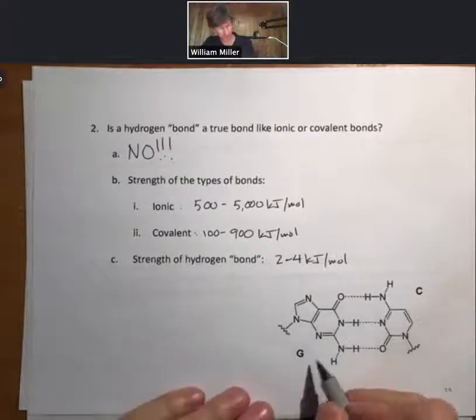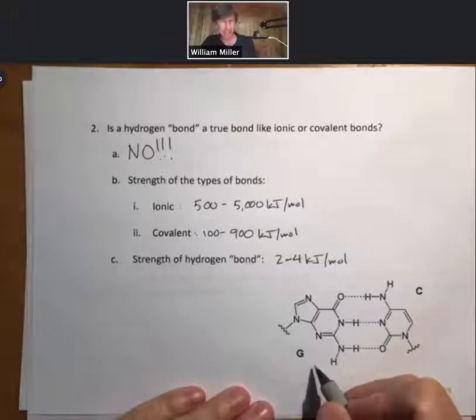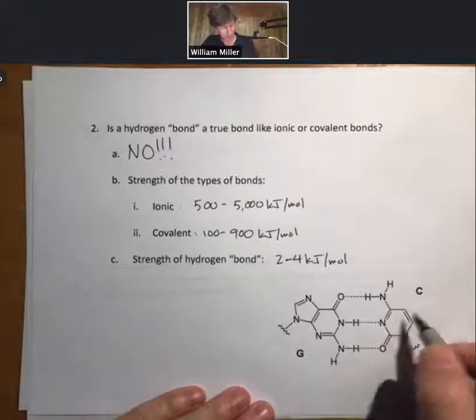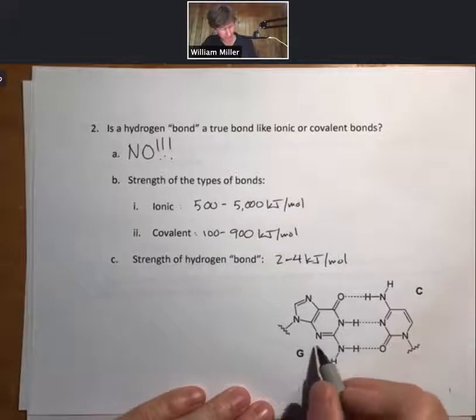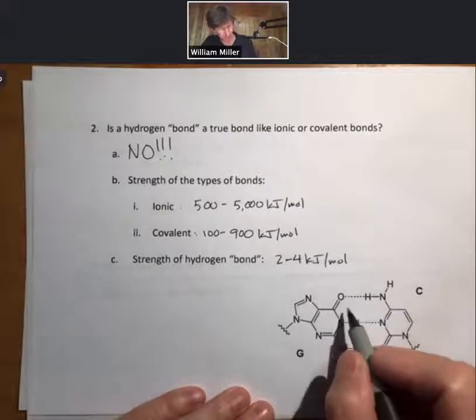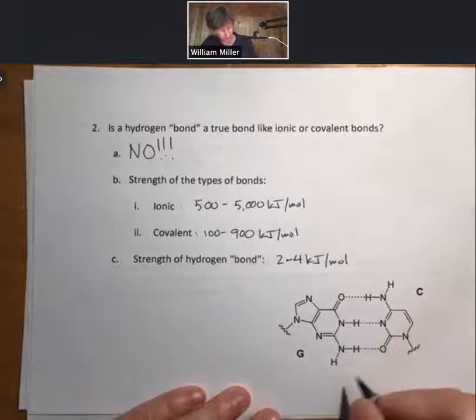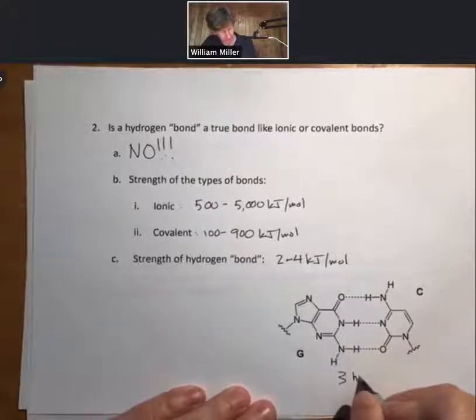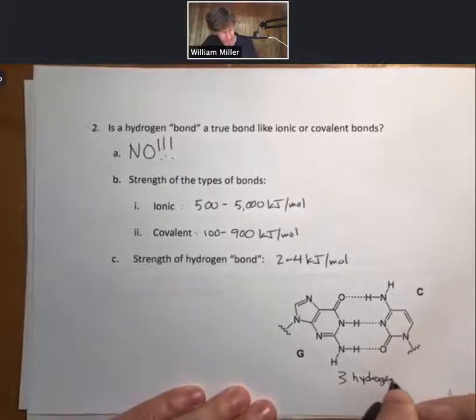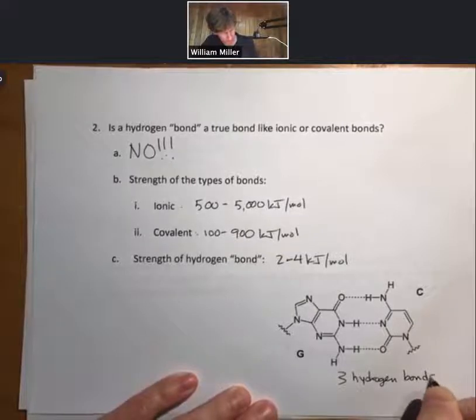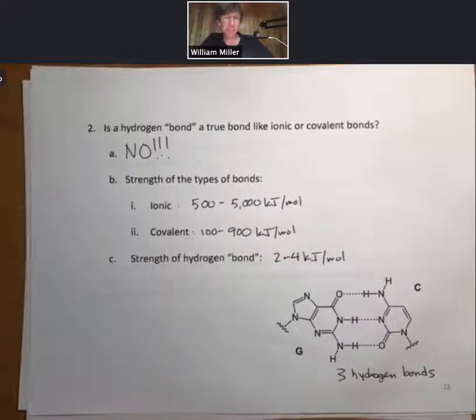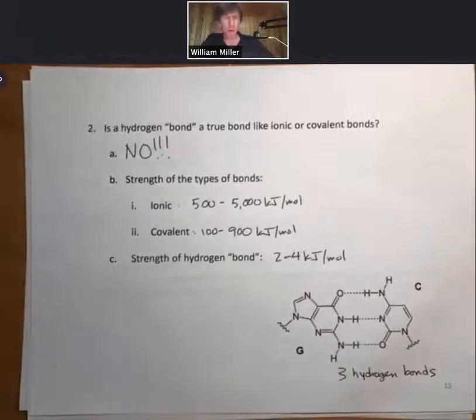and so this is base pair with one, two, three hydrogen bonds between them, you can see that if you get enough of these hydrogen bonds at two to four kilojoules per mole and in, say, in DNA,